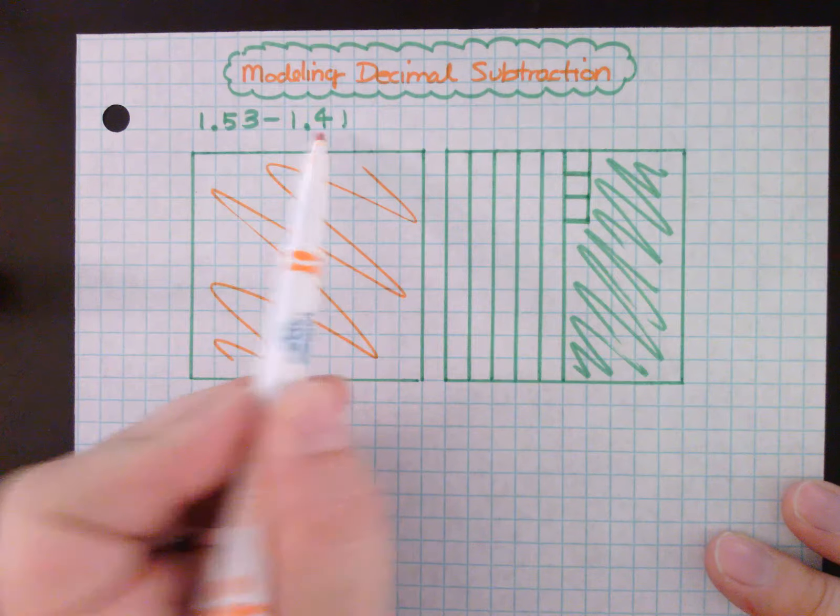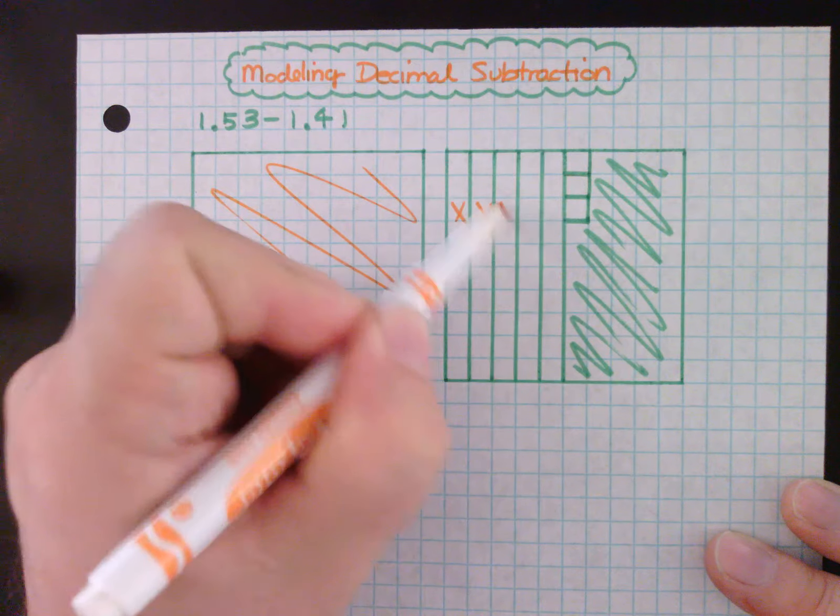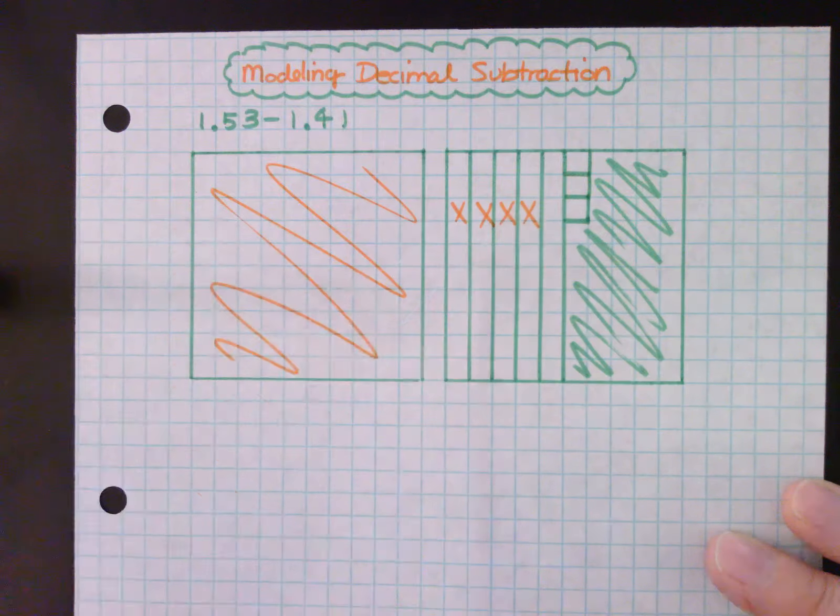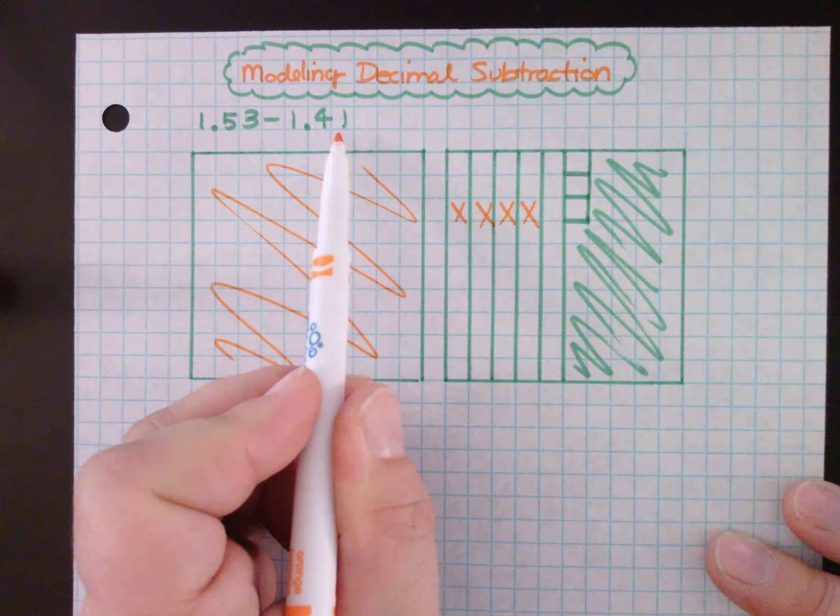And then I have four tenths I have to get rid of, so I'm going to get rid of this tenth, this tenth, this tenth, and this tenth. And then I have one one-hundredth that I have to get rid of, so I'm gonna get rid of this one-hundredth.